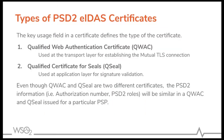Now let's talk about the types of PSD2 eIDAS certificates. Digital certificates can be used for various purposes, and the PSD2 specification defines two types. The first is the Qualified Web Authentication Certificate (QWAC). QWACs are similar to SSL certificates used in SSL connections, but now they have the qualified status with additional PSD2 QC Statement information. They can be used at the transport layer to authenticate a TPP.